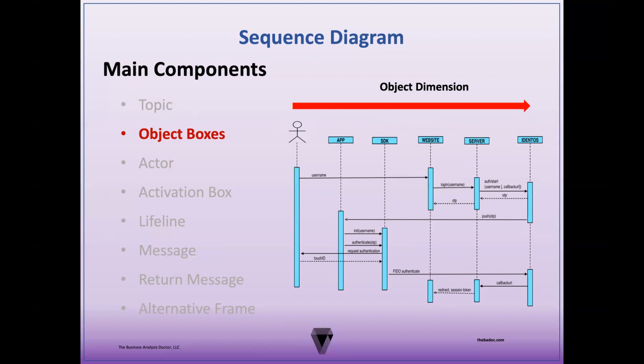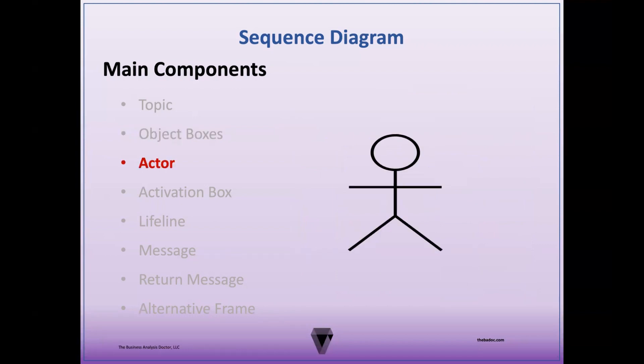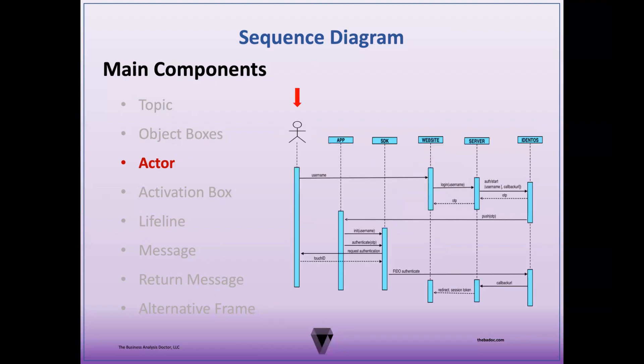Generally, the objects involved in the operation are listed from left to right according to when they enter the operation, but they can also be listed in any order that allows for the most clarity. An actor is an element external to the system that performs the function — this can be a human, organization, or external system. It's represented by stick figures and also has a designated column. It's best practice to place the initiating actors on the left-most side and reactive system actors on the right-most side of your diagram.